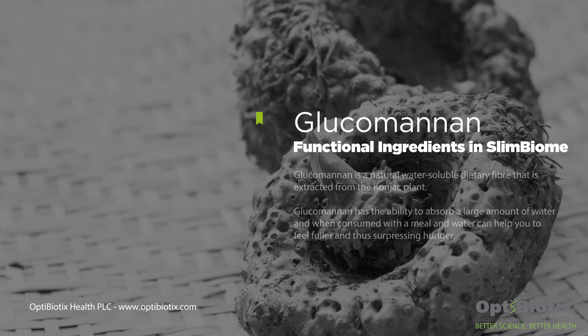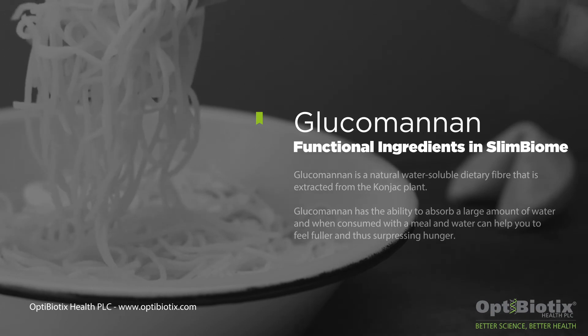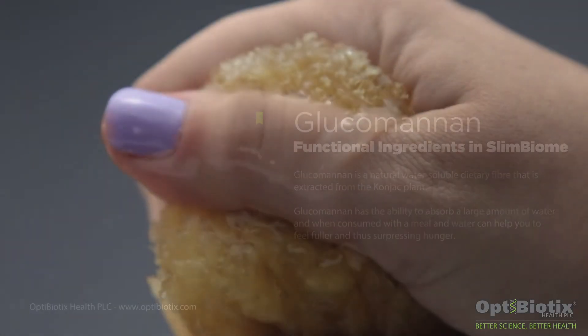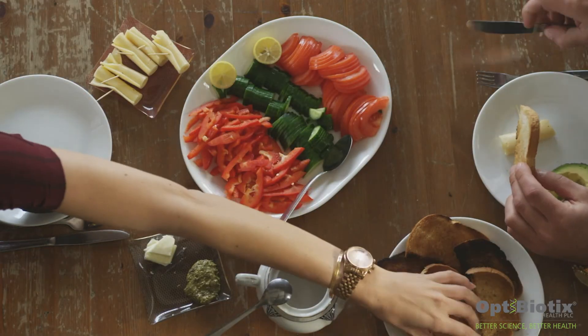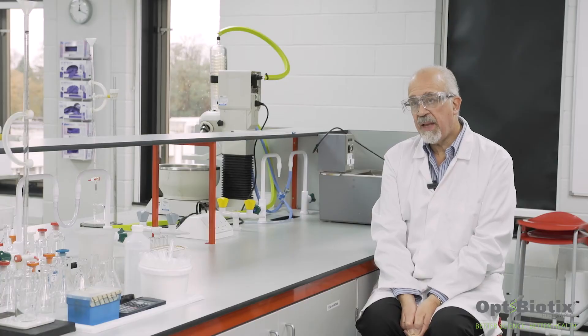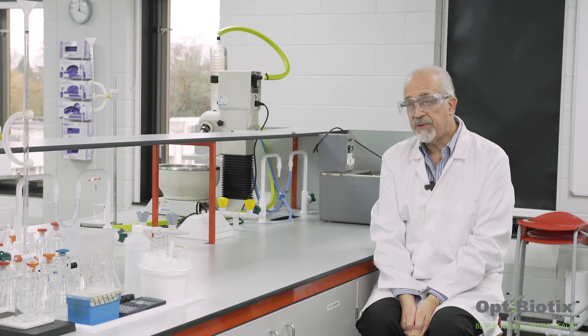Another functional carbohydrate is glucomannan. Glucomannan has the ability of absorbing large amounts of water. If you consume dry glucomannan with a meal or shortly before a meal, and then you consume water shortly after that, it will expand in the stomach, making you feel fuller and also suppressing hunger.